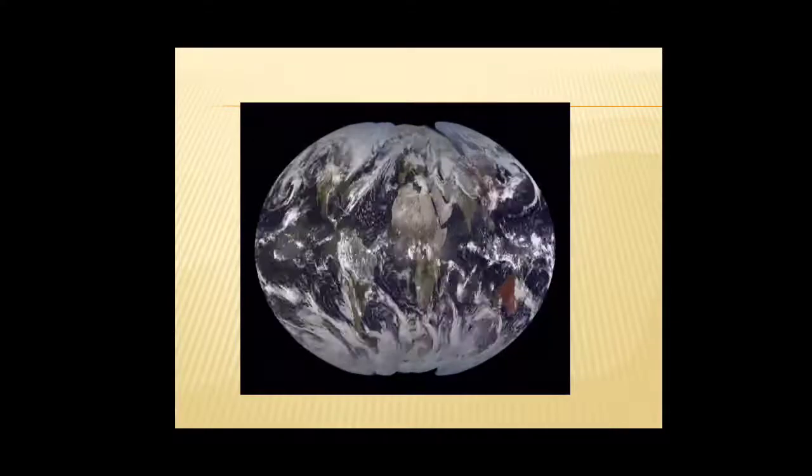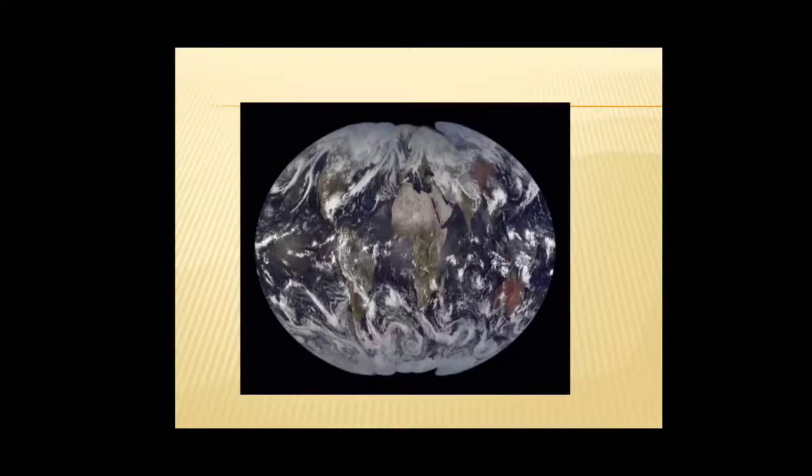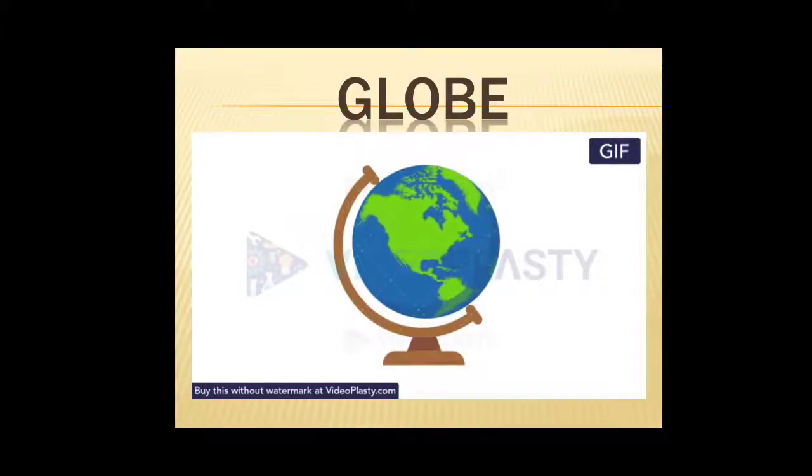Photographs of the earth taken from space proved that earth is round. Earth is a big planet. It is not possible to see the entire earth from one place. So a globe is a small model of the earth. By studying the globe we can study about the location and shape of continents and countries. It helps us to know about the different oceans and seas also.